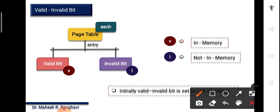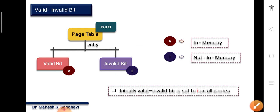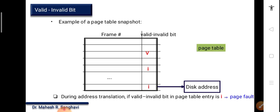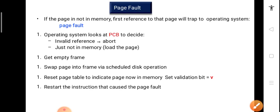Every page entry has a valid bit and an invalid bit. Valid bit means the page is in memory; invalid means it's not. When the bit is set to V, it indicates the page is in memory. If the page is not in memory, we set it to I. By default, all values are set to I because pages are invalid by default. Whenever a page is brought into memory, we set it to V. This is the idea behind the page table.